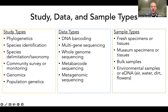Molecular data can also be generated in different ways, from sequencing single DNA barcodes to entire genomes to metagenomic data, and these data can come from single specimens — which could be fresh or from museums — from bulk samples containing many specimens, or from environmental samples such as flowers.